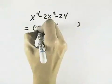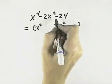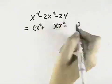To get x to the fourth in our first term, we need to have an x squared in each of the first places. Because the second sign is negative, that means our signs will be opposite. One will be positive, one will be negative.